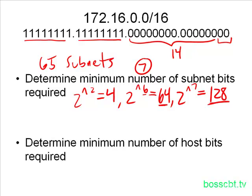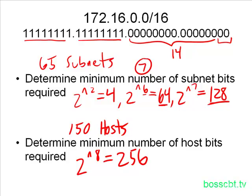Now, let's do the same thing, but for the host section. We said that the requirement was 150 hosts per subnet. We know that two to the power of seven is 128, which is not enough. So let's increase that one, two to the power of eight, and that equals 256. That is more hosts than we need per subnet, but if we go any lower, two to the power of seven, then we're short. So two to the power of eight, or eight host bits, is what we're going to need.